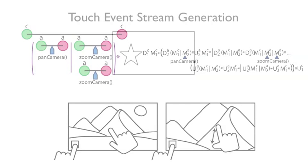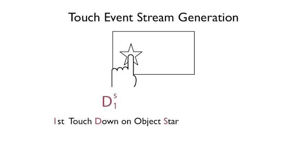Now let's look at the framework in more detail. Proton generates a stream of touch event symbols from user input.